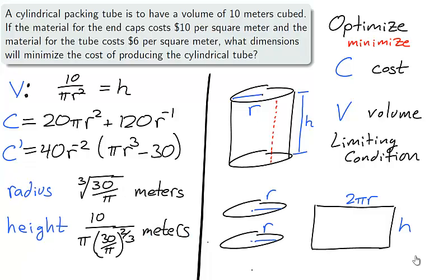We have the radius, which we plug into the limiting condition relation to find the height. Both values are unsatisfying to look at, but they are the values which will minimize the cost in producing the tube, though you'll have a pretty tough time creating the tube with a radius cube root of 30 over π.